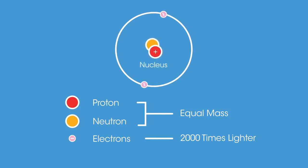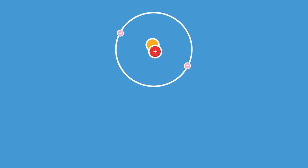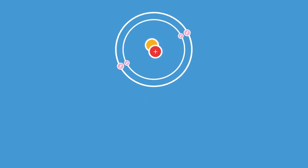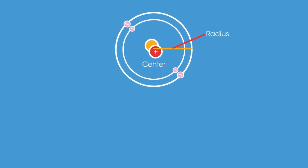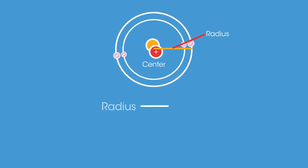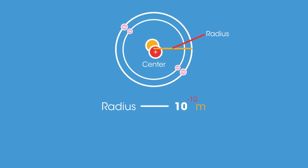So that's the mass of an atom — let's talk about its size. One way to describe the size of an atom is its radius. The radius of an atom is the distance from its center, where its nucleus is, to the outermost shell of electrons. The radius of an atom is typically 10 to the power of negative 10 meters, which is very small.